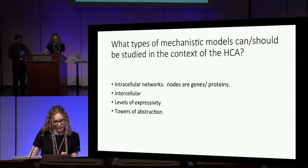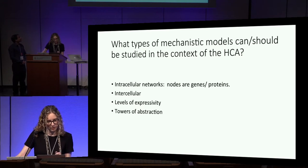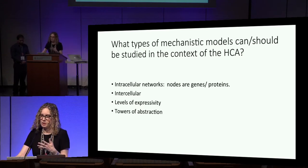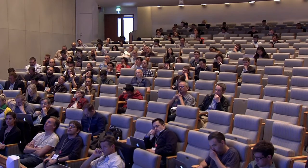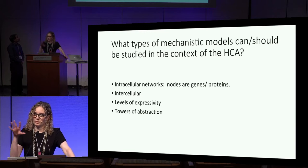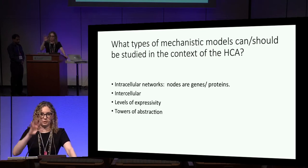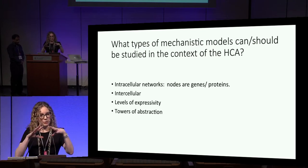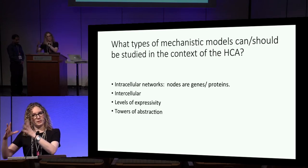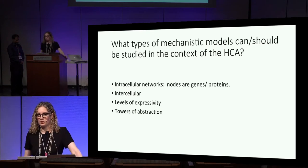The first question we tackled was: what types of mechanistic models do we want to use in this consortium? When thinking about a mechanistic model, we're talking about either intracellular signaling networks or intercellular signaling networks — the communication between cells. Each part is driven by different parts of the data. We use different parts of the data for different parts of these network models — one part to construct the network and another to test whether it represents certain observations.